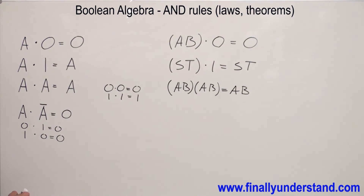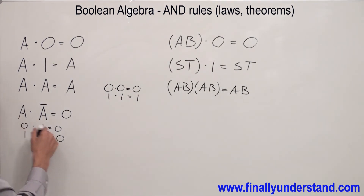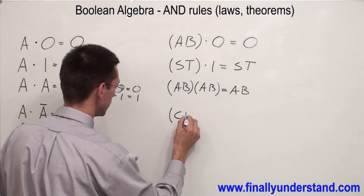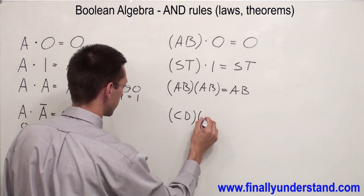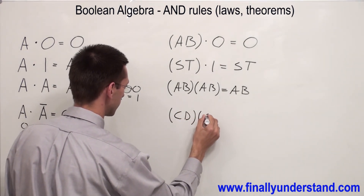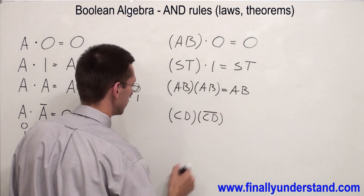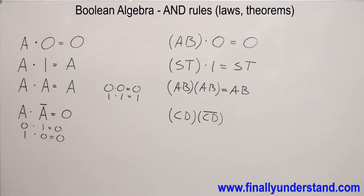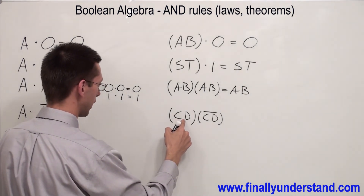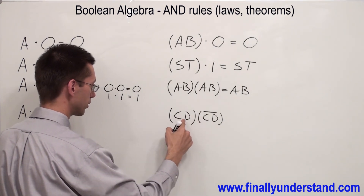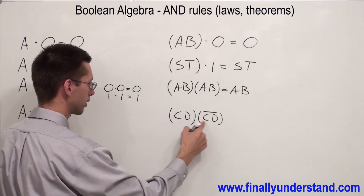If I have a situation similar to this property, for example I have C·D times the complement of C·D — the complement (NAND) is the complement to the AND. So simply I multiply complements, and that's why my answer is going to be equal to zero.